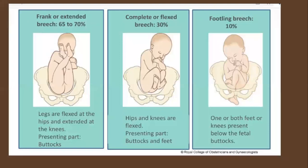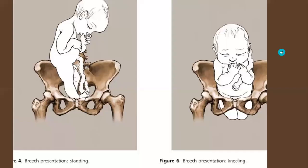Frank or extended breech has an incidence of 65–70% and is the most common type. Complete or flexed breech accounts for 30%, and footling breech 10%. For the frank extended breech, legs are flexed at the hips and extended at the knees, with the presenting part being the buttocks. In complete flexed breech, hips and knees are both flexed, with presenting part being buttocks and feet. In footling breech, one or both feet or knees present below the fetal buttocks, and the presenting part is a foot.